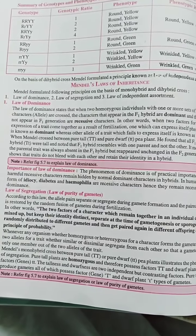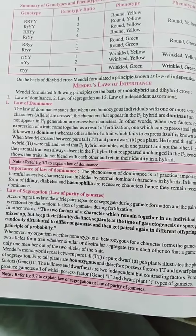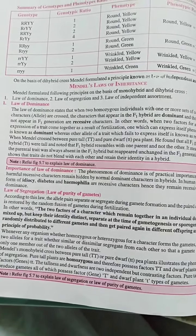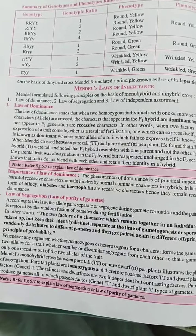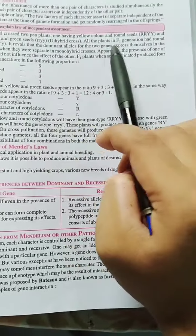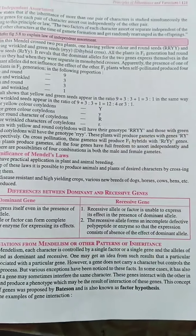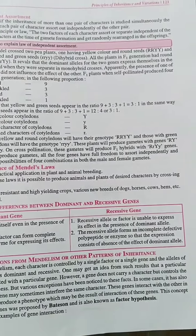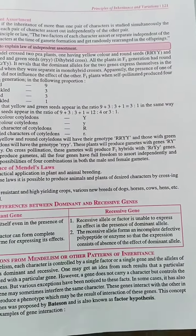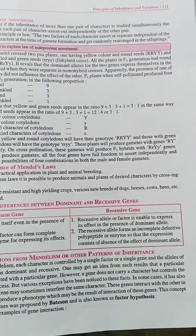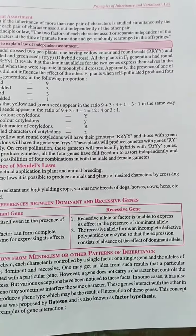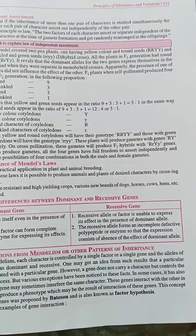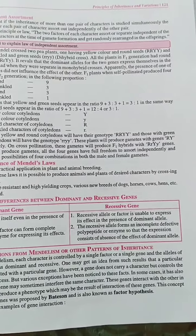The law of independent assortment states that the two factors of each character assort or separate independently of the factors of other characters at the time of gamete formation, and get randomly rearranged in the offspring.